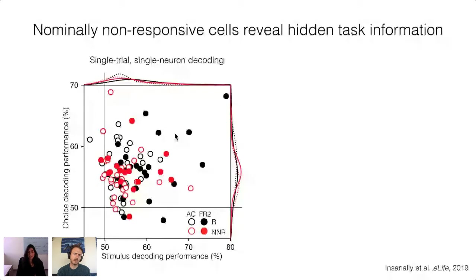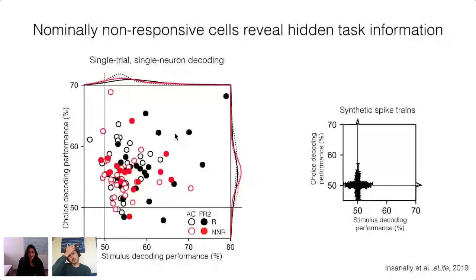This is single-cell, single-trial decoding from highly variable, sparsely firing cortical neurons, so we don't expect decoding performance to be very high for any given cell. A control was performed by attempting to decode from spike trains generated by randomly sampling ISIs for an entire session — this fails as expected.